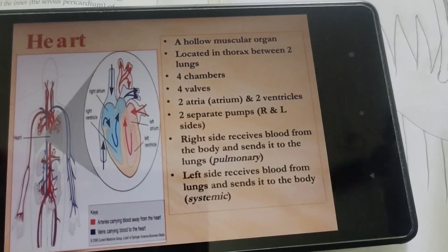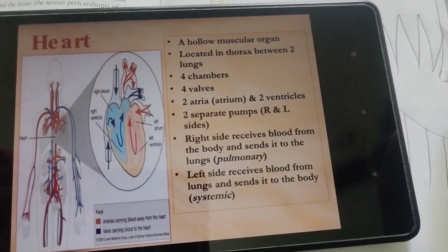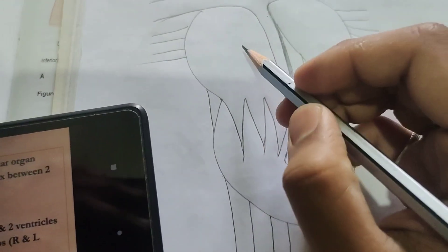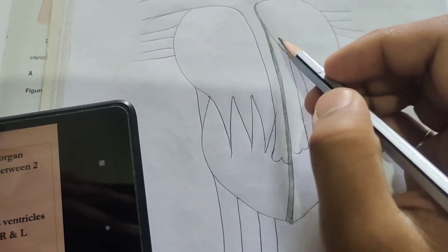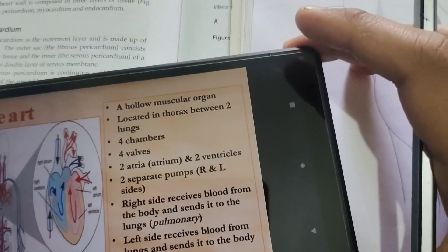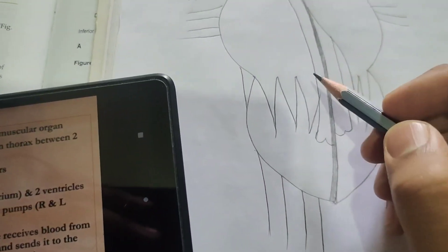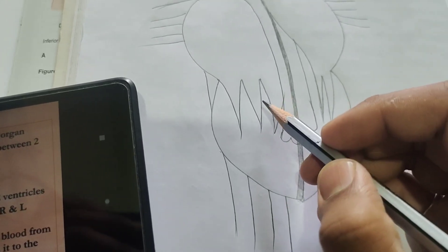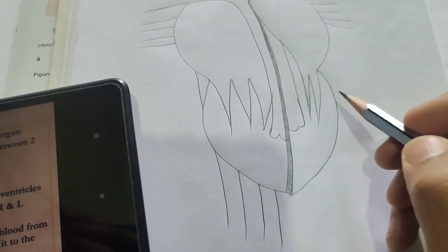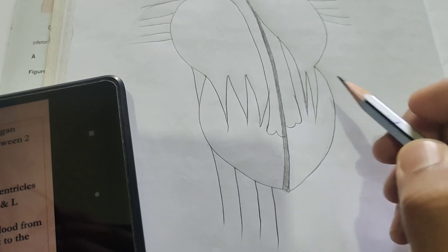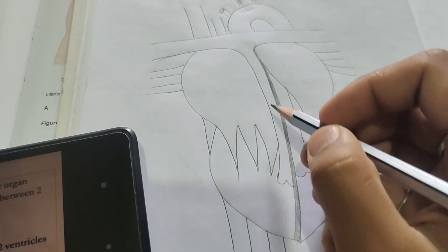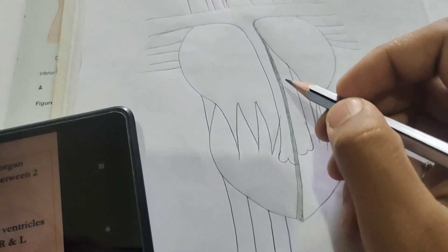The heart has four chambers. The upper two chambers are called atria and the lower two chambers are called ventricles. There are four valves present in the heart: the tricuspid valve, the bicuspid valve (or mitral valve), and two semilunar valves — the pulmonary valve and the aortic valve.